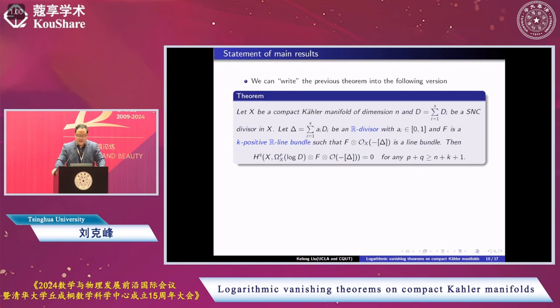That's very flexible when we construct by proving some vanishing theorem and identify the sheaf cohomology to L2 cohomology and using harmonic theory. We can rewrite the previous theorem in the following form: We consider a compact Kähler manifold of dimension n and a divisor D, simple normal crossing, and each D_i is irreducible.